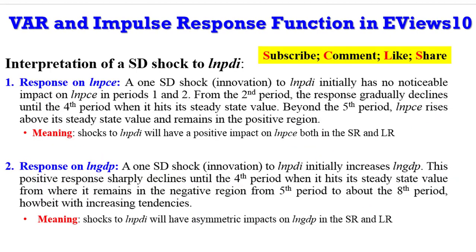If you need the notes for the interpretation I just made, here they are on the screen. In interpreting a standard deviation shock to PDI: what will be the response of PCE? You can simply say that initially there is no noticeable impact on PCE in periods 1 and 2. But from the second period, the response gradually declines up to the fourth period when it hits the steady-state value. Beyond period 5, log of PCE rises above the steady-state value and remains in the positive region.